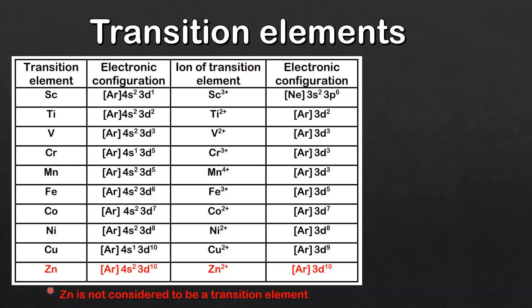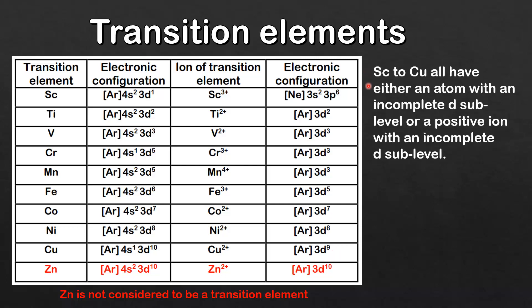If we look at the electronic configuration of the atoms scandium to copper, we can see they all have incomplete D sublevels, apart from copper. However, if we look at the electronic configuration of the Cu2+ ion, we can see it has an incomplete D sublevel. So scandium to copper all have either an atom with an incomplete D sublevel or a positive ion with an incomplete D sublevel.